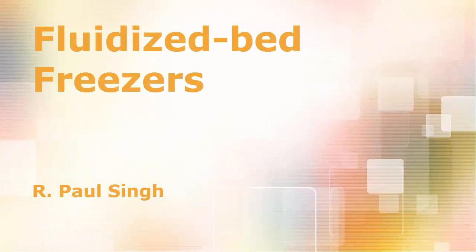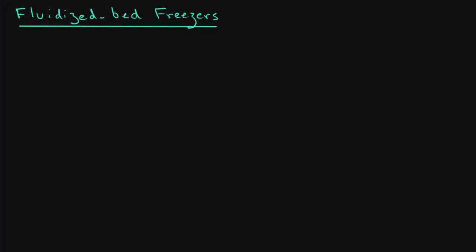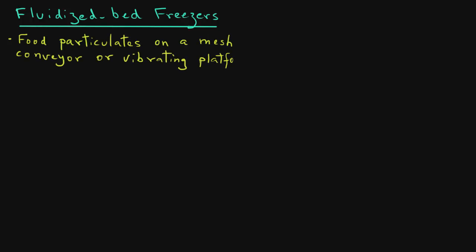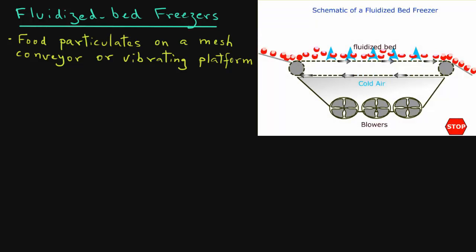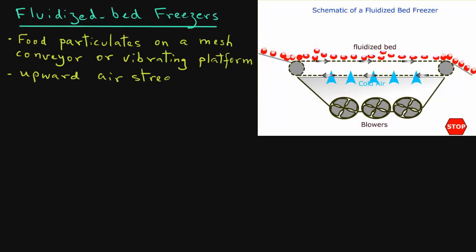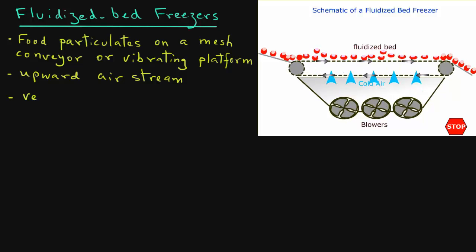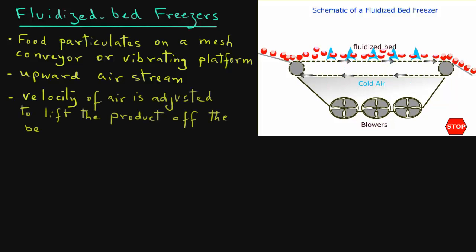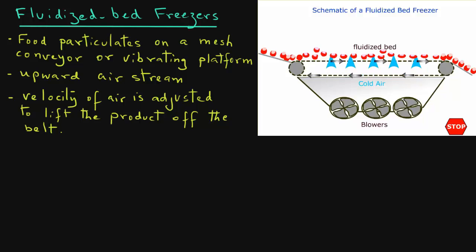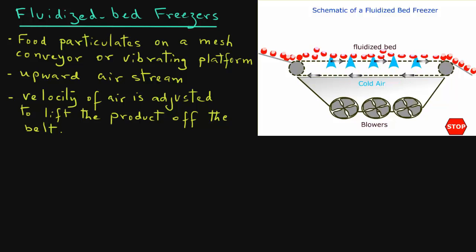In a fluidized bed freezer, food particulates, generally of a uniform size, are placed on a mesh conveyor or a vibrating platform. The air stream is in an upward direction, and the velocity of the air is adjusted to just lift the product off the belt. This also causes the product to flow if there is a change in elevation of the conveyor.